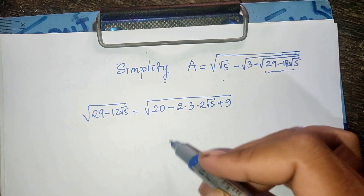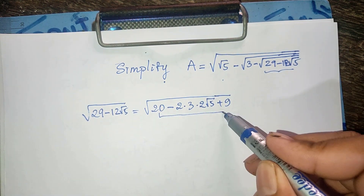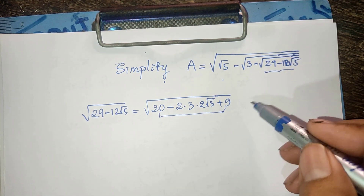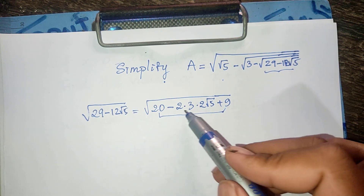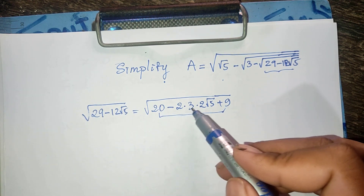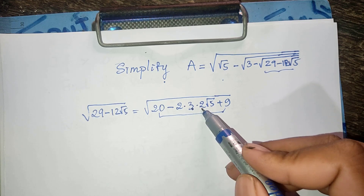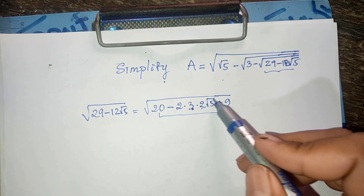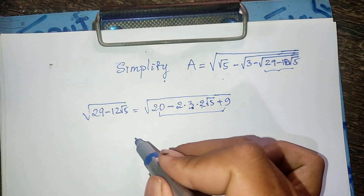You see this: 20 plus 9, we get 29. And 2 multiplied by 3 gives 6, and 6 multiplied by square root of 5 gives 12 square root of 5. So that confirms the decomposition.